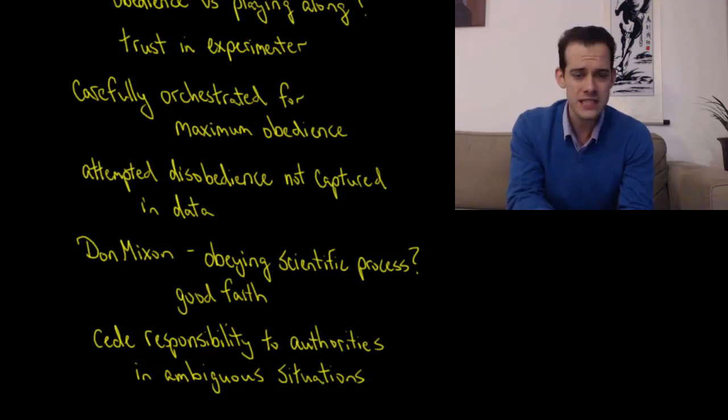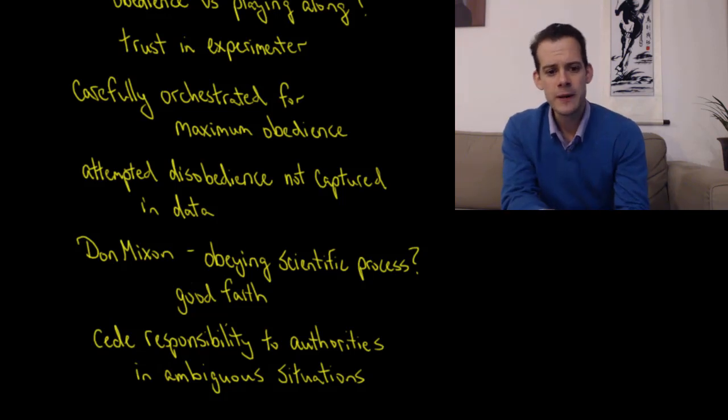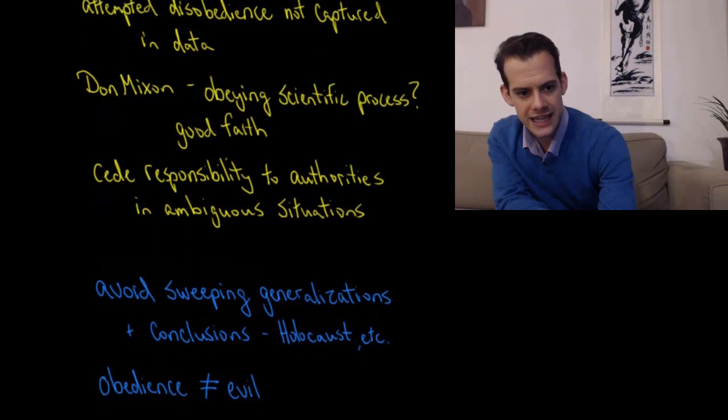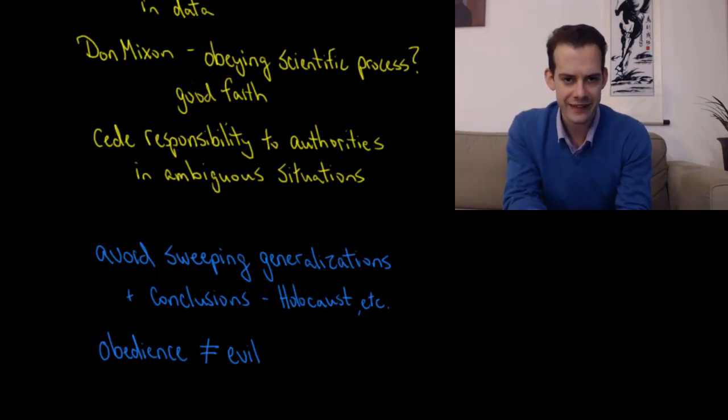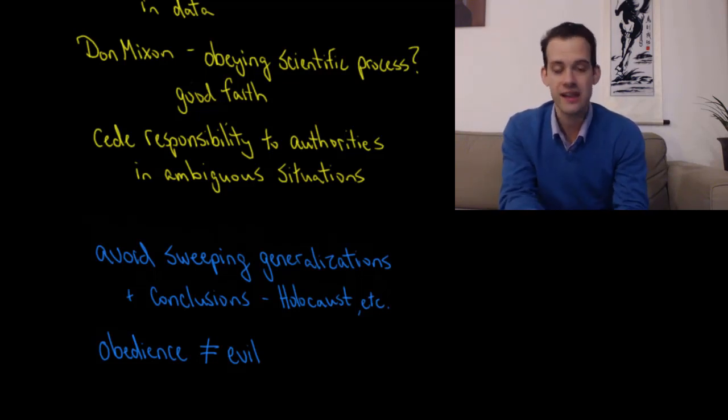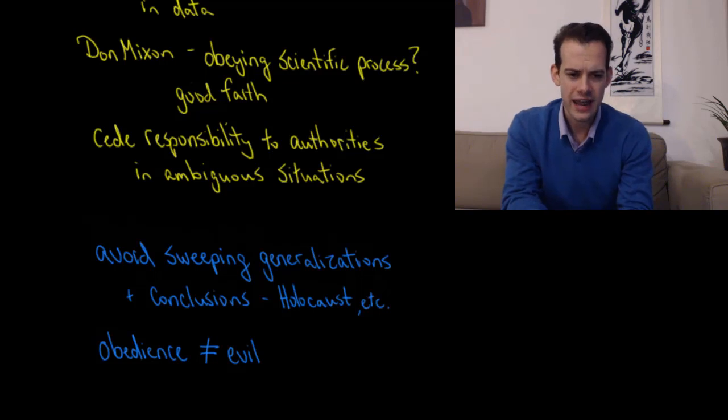So when we think about this study and what it means, I think it's important to consider that we should avoid sweeping generalizations. It's easy to say, oh yes, most people would kill a stranger if told to by a man in a lab coat. I think that's a gross oversimplification of what we see going on here. It's actually a very complex situation. And so we should avoid sweeping generalizations and conclusions and comparisons. I don't think it's quite right to compare this directly to the atrocities of the Holocaust.